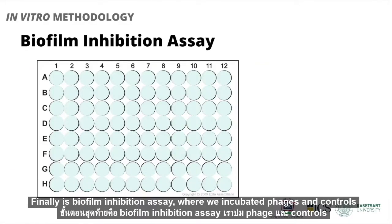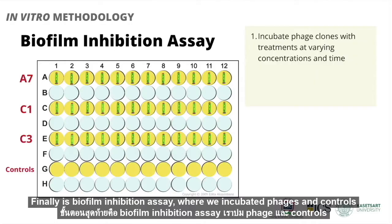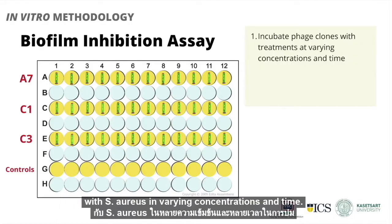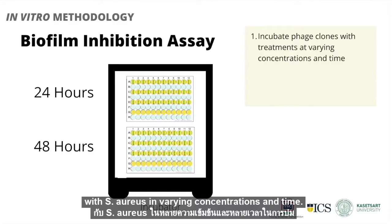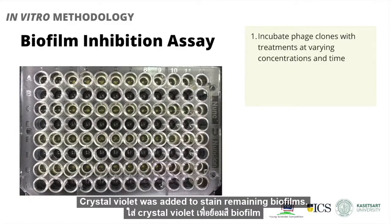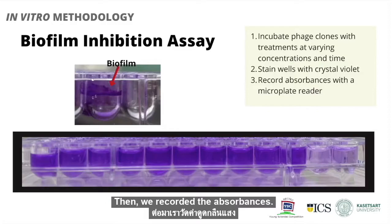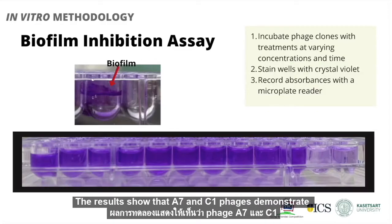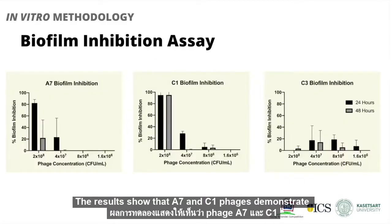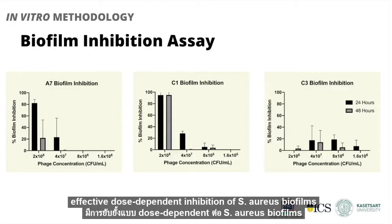Finally, it's biofilm inhibition assay, where we incubated phages and controls with S. aureus in varying concentrations and time. Crystal violet was added to stain remaining biofilms. Then we recorded the absorbances. The results show that A7 and C1 phages demonstrate effective dose-dependent inhibition of S. aureus biofilms.